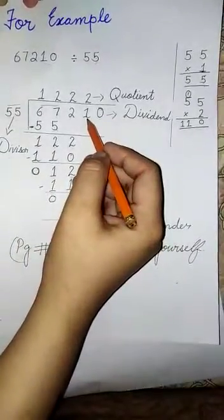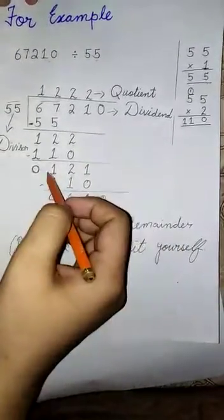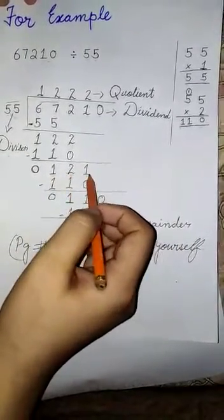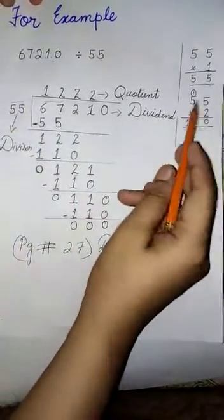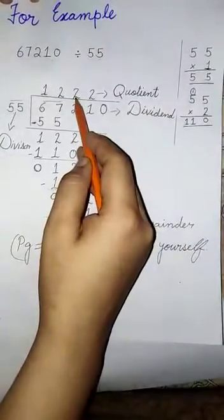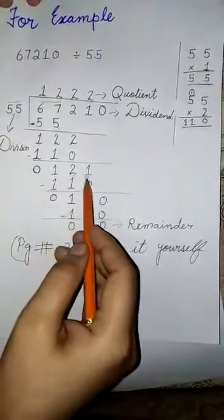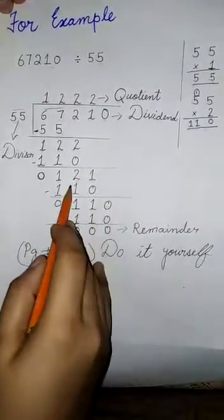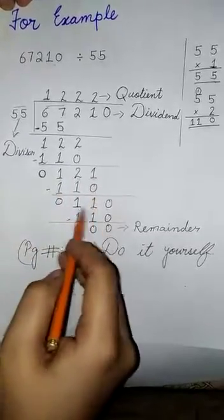So we bring down 1 from tens place and again we divide 121 by 55. We know 55 into 2 is 110. So we put 2 at quotient place and 110 below 121. Then we subtract 121 from 110, we get 11.